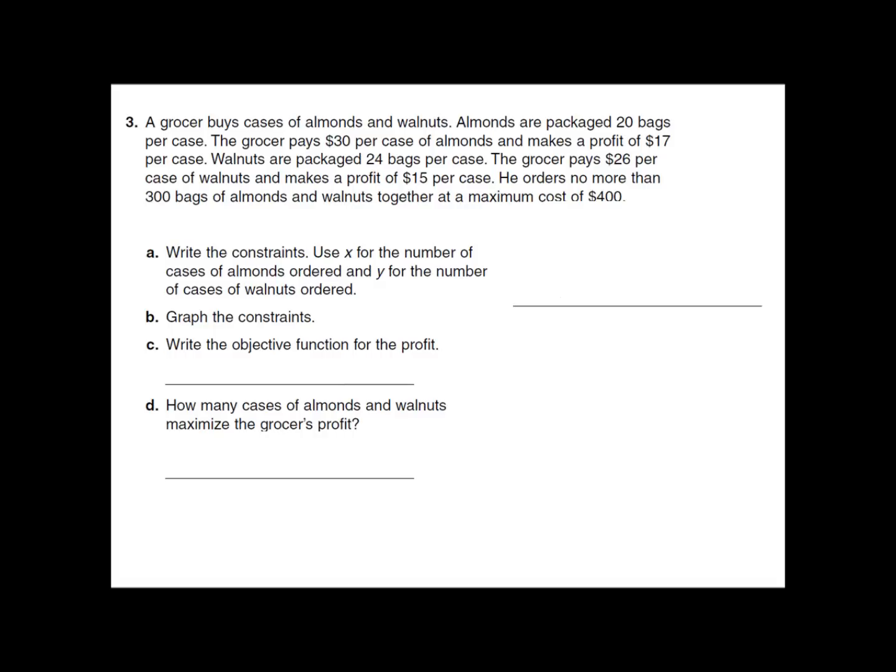He orders no more than 300 bags of almonds and walnuts together, and there's a maximum cost of $400 — so there's a limitation on how much the grocer is willing to spend. First step: they want us to write the constraints, these inequalities. Use X for the number of cases of almonds ordered and Y for the number of cases of walnuts ordered. Start with the obvious ones that everybody overlooks: X and Y have to be greater than or equal to zero. We're not going to order negative cases of almonds. Don't forget about those.